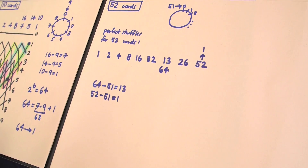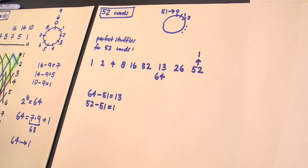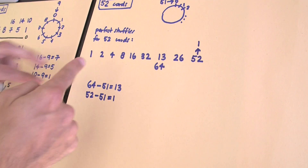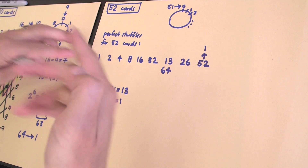So after just eight perfect shuffles of a deck of 52 cards, not only is card one in the right position, but if you do this for any card, you're going to find that they're all in the right position. But how do we know the other cards haven't gone off on their own adventures and are still somewhere else in the deck?